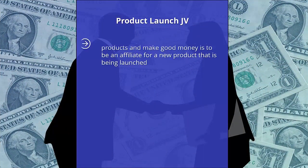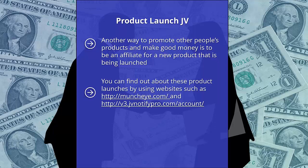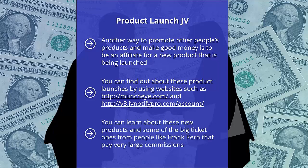Product Launch JV. Another way to promote other people's products and make good money is to be an affiliate for a new product that is being launched. You can find out about these product launches by using websites such as muncheye.com and v3.jvnotifypro.com/account, which have information about many product launches coming up. You can learn about new products and some of the big ticket ones from people like Frank Kern that pay very large commissions. What the smart people do for the big ticket launches is create a unique bonus pack that is related to the product and can only be claimed if your subscriber buys through your link.